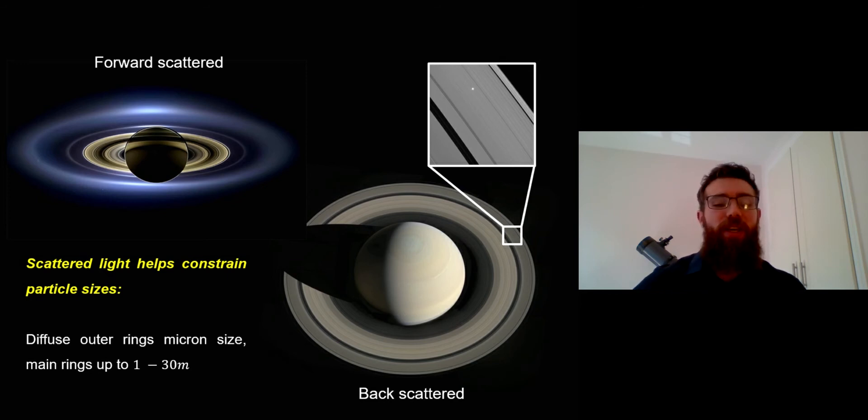The light is passing through the rings and it's being scattered forward so that we can see it. It's the same effect that you would have if you're driving down the road on a sunny day and your windscreen is scattering all that light into your eyes. You've got very small particles on the windscreen causing that forward scattering. The smaller particles typically forward scatter more than the larger particles.